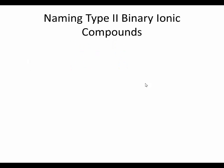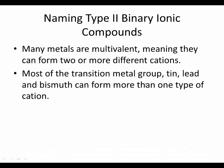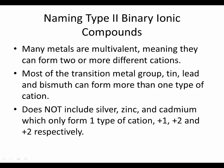Now you're telling me there's a type 2? Type 2s aren't much harder — they use the same rules as type 1s with just one small additional change. The problem is that many transition metals are multivalent, meaning they can form more than one type of cation with different charges. Most of the transition metal group, including lead and bismuth — which technically aren't in the transition metal block — are multivalent. It does not include silver, zinc, and cadmium.